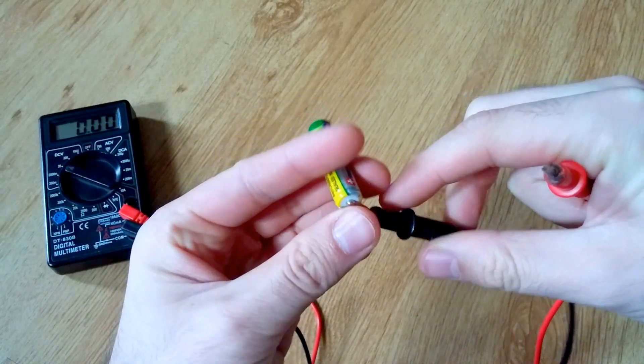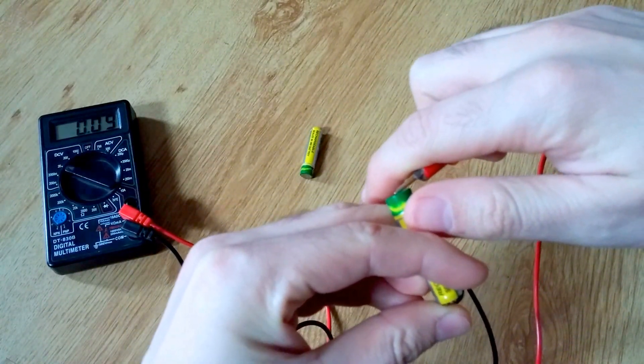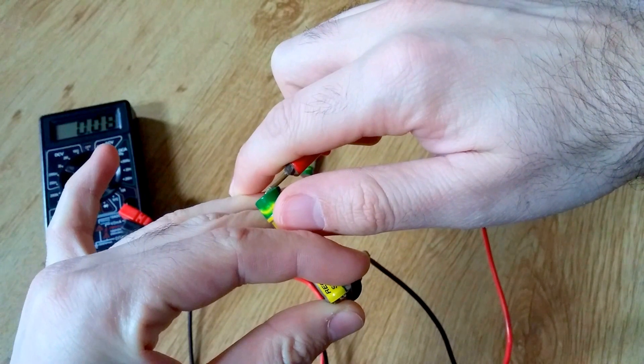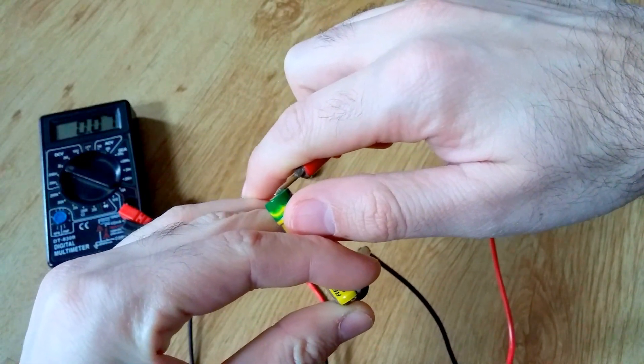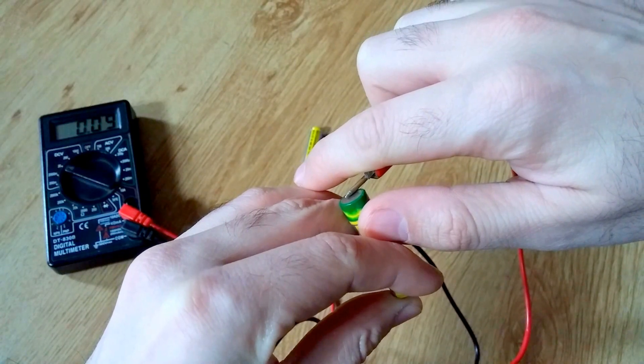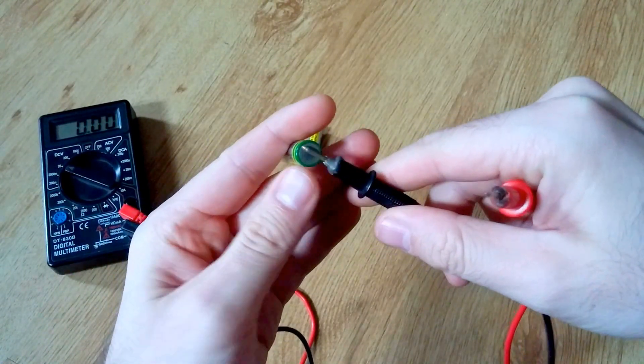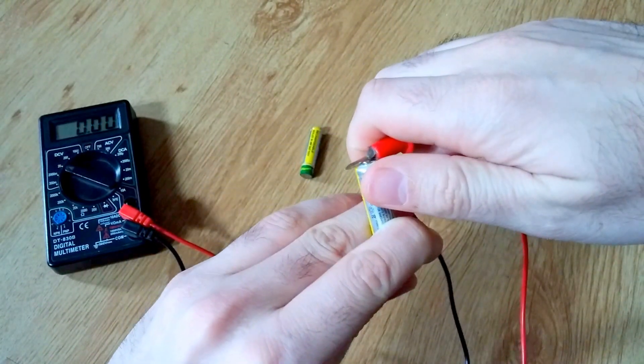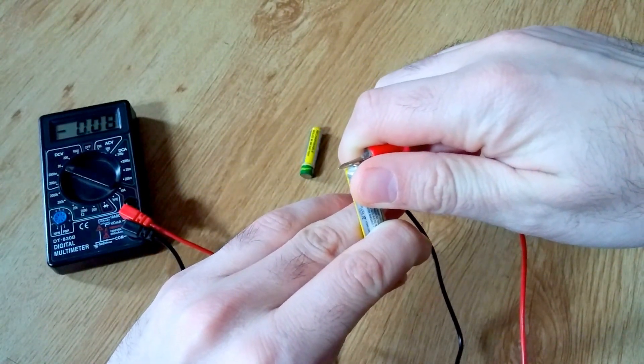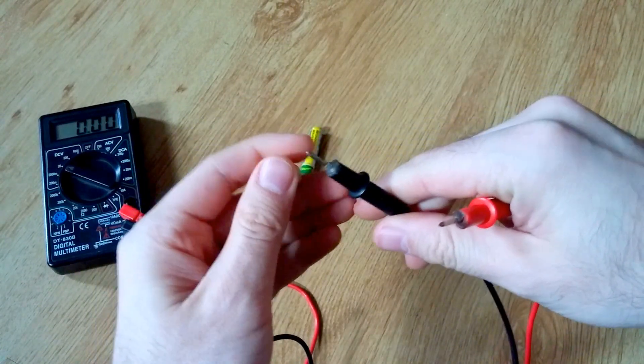Now it's positive 0.089 volts. So it's negative measured normally and it's positive measured in the reverse direction.